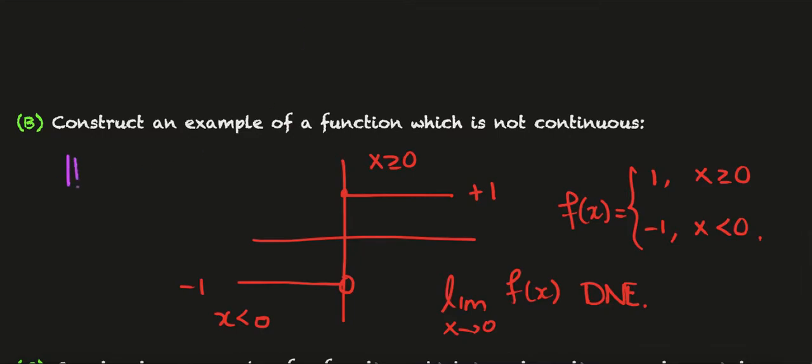The fancy word for this function is the Heaviside function, depending on your pronunciation. This gives a perfectly good example of a function which is not continuous. It's not continuous at the origin.